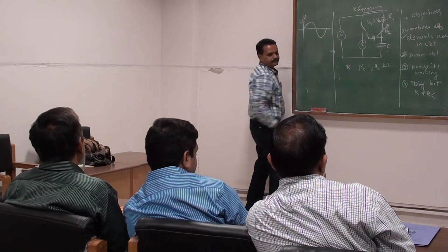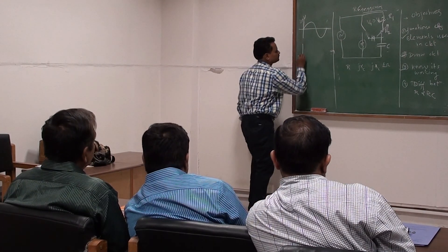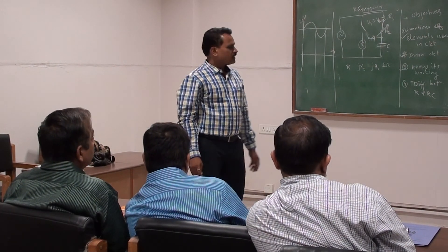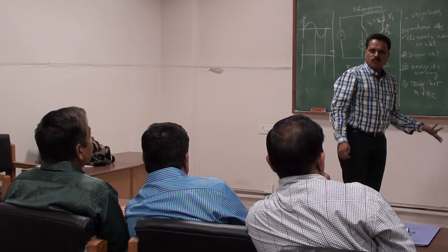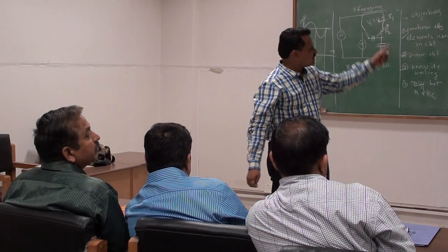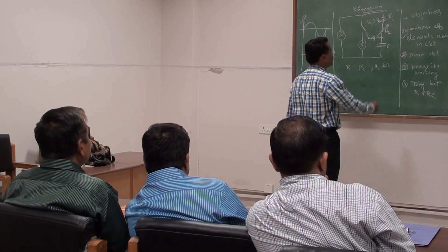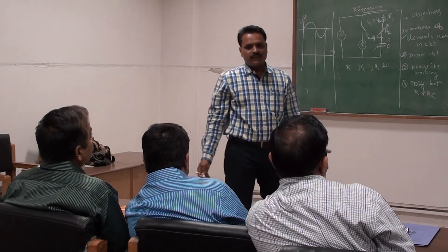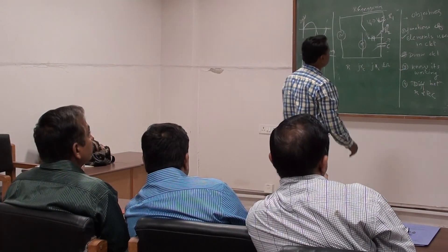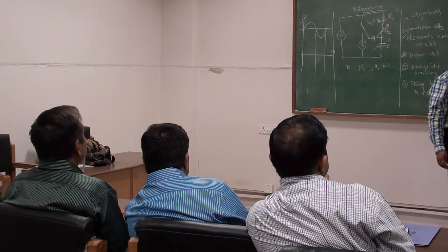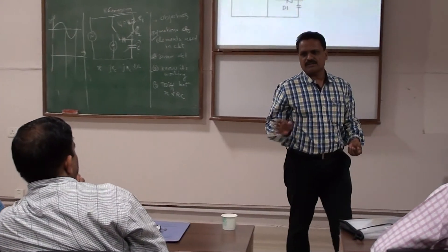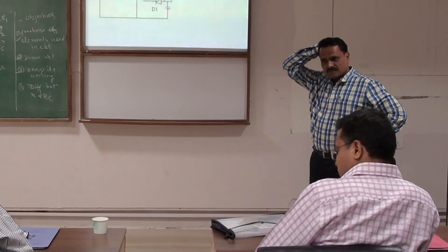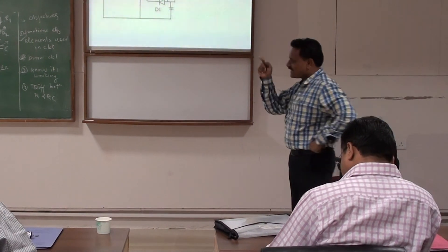In the RC triggering circuit, R is there to vary the firing angle. We can also choose a variable capacitor instead of a variable resistor since variable capacitors are available. D1 performs half-wave rectification, the same as before. There is also a D2 diode in this circuit, which performs a second half-wave rectification — its function will be clarified shortly.